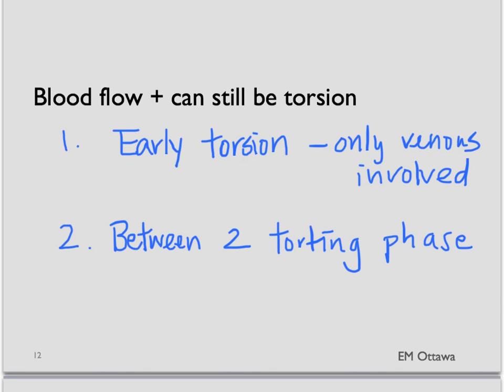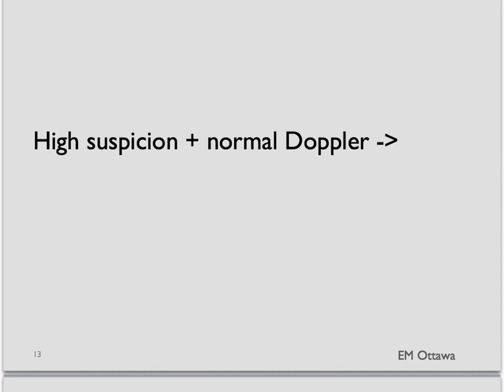Number two, if the ovary is torting and detorting, and if you're doing the ultrasound in between the two torting phases, then the images might be normal. Therefore, in cases where there is a high clinical suspicion, even the presence of normal Doppler flow does not rule out the diagnosis. We still want to discuss the case with the consultant.